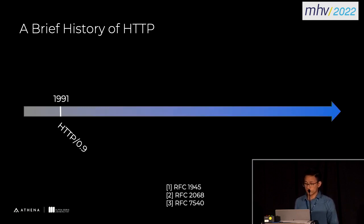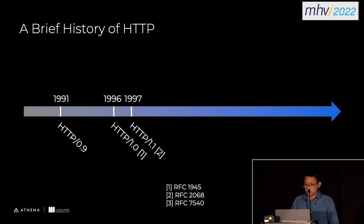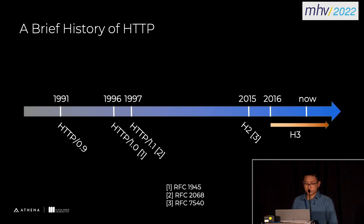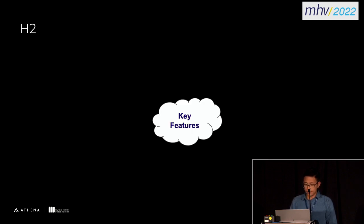HTTP has been used for over 30 years and it was started in 1991 with version 0.9, where only raw data transfer from the server to the client was supported. Then HTTP version 1 and 1.1 were continuously specified by IETF in RFC documents, and about 10 years later HTTP/2 was standardized in RFC 7540. Currently we are working on HTTP version 3 since 2016, and in this paper we are going to focus on HTTP/2 and HTTP/3 versions and compare them to HTTP 1.1.